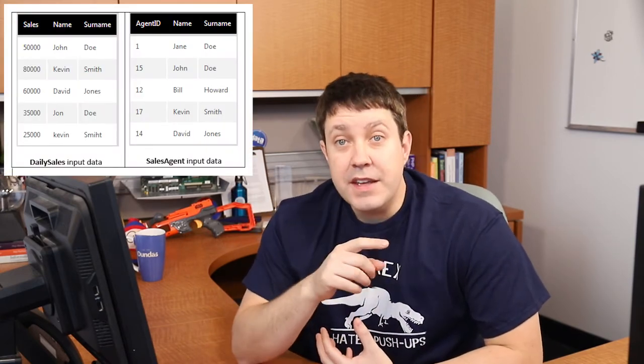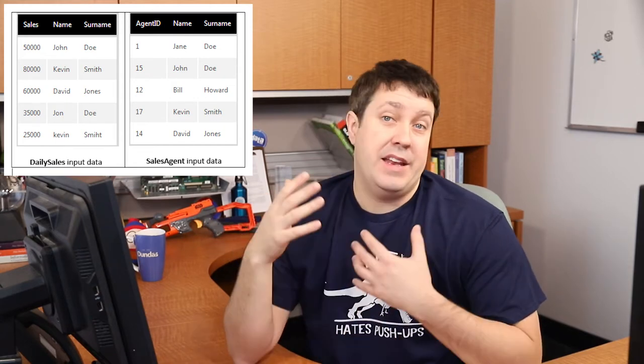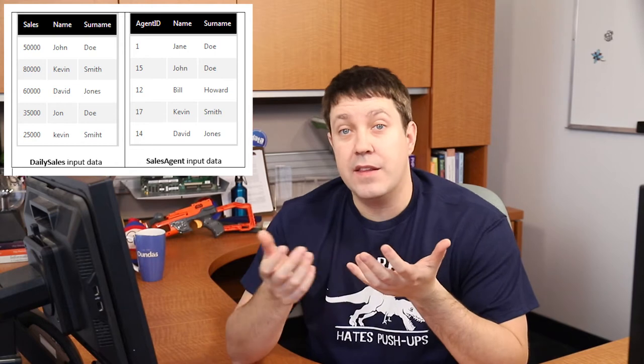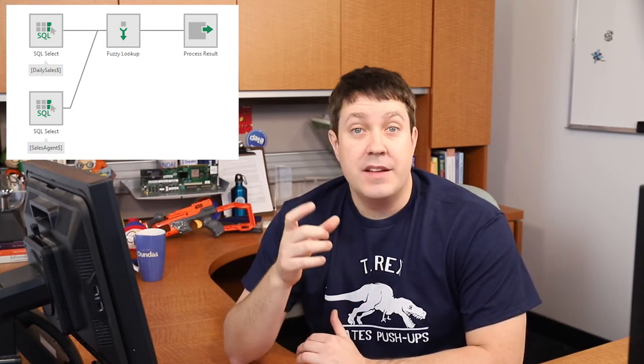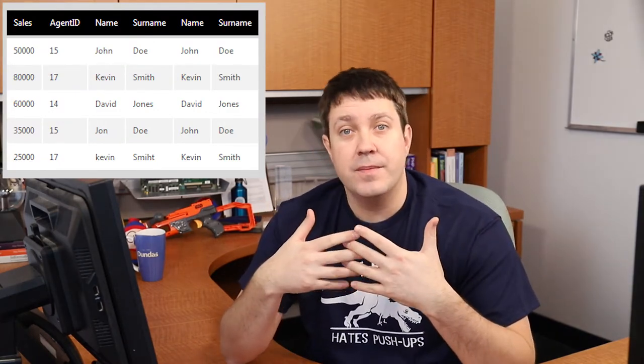First of all, data quality. Sometimes blending data between different sources isn't possible because of spelling, formatting, inconsistencies, and such. Look at these two tables — you can see that some of the people overlap from table to table. John Doe is spelled J-O-N and J-O-H-N, and Kevin Smith is not capitalized, with his last name spelled wrong on the other side. You can use the fuzzy logic functions to help with these sort of data issues. The fuzzy logic is able to bring together two data sources, realize that inconsistencies exist, and still join them together.